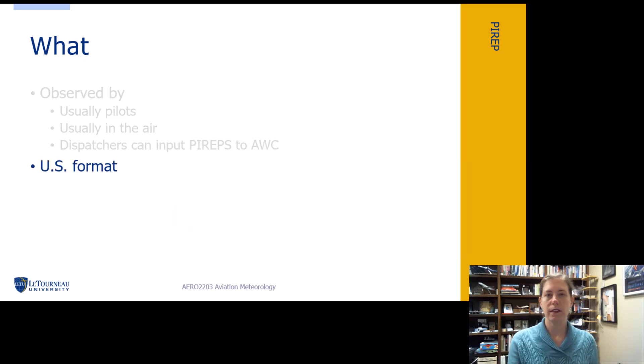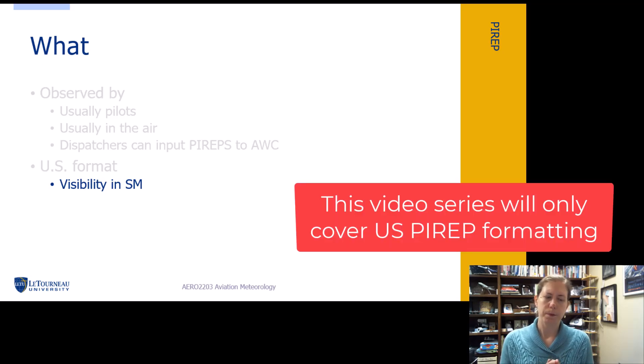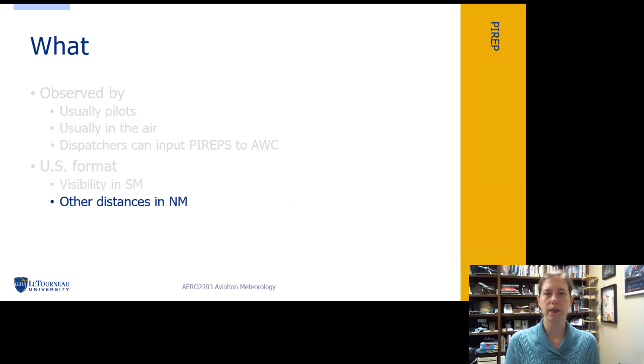In the United States, we use visibility given in statute miles. This is the only part of the pilot report that uses statute miles. Any other distances that we see in a pilot report are distances in nautical miles. So the location of the aircraft, when it reported, whatever it saw, that's given in nautical miles. Visibility is the only thing in statute miles.